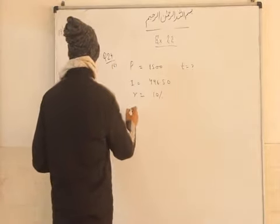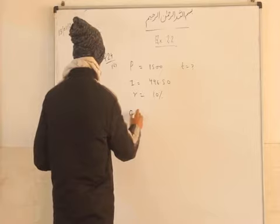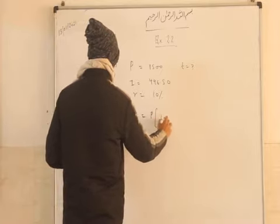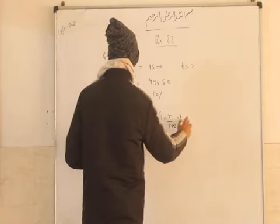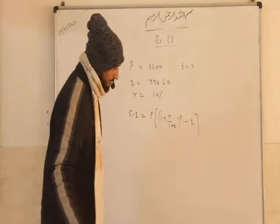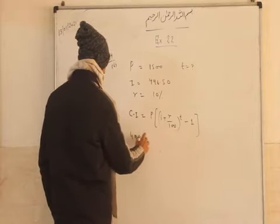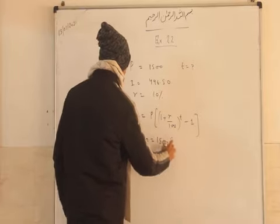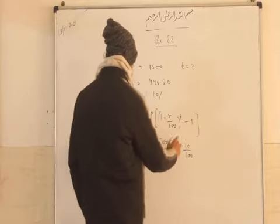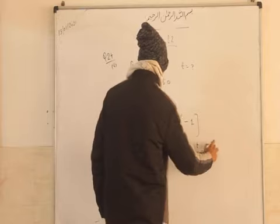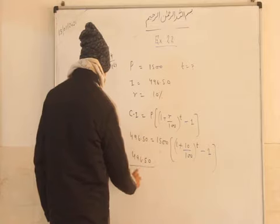We need to find the time required to yield the given amount of interest. The principal is given, and the compound interest is given. The compound interest formula is: CI = P × [(1 + R/100)^T − 1]. So compound interest is 496.50, principal is 300, and we apply 1 plus 10 over 100 to the power T, minus 1.